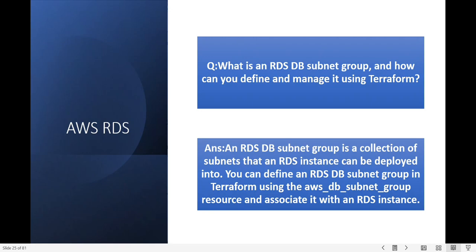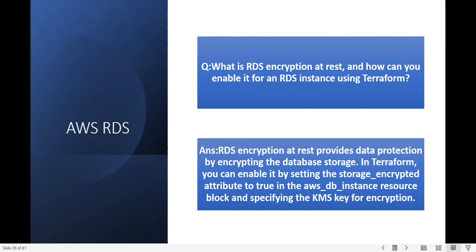Next question: what is RDS encryption at rest and how can you enable it for an RDS instance using Terraform? RDS encryption at rest provides data protection by encrypting your entire database storage. In Terraform you can enable it by setting the storage_encrypted attribute to true in the AWS DB instance resource block, and you can specify the AWS KMS key for encryption.